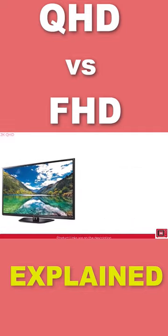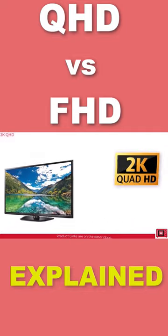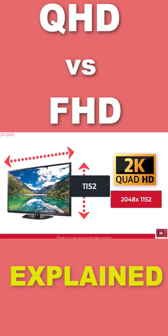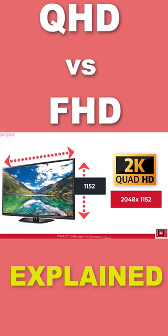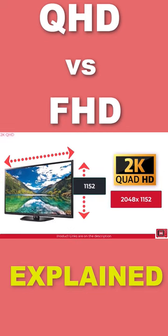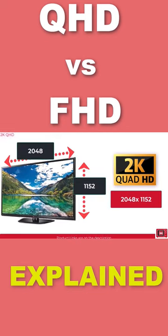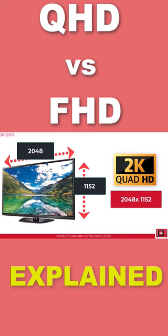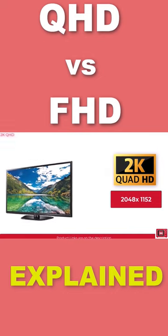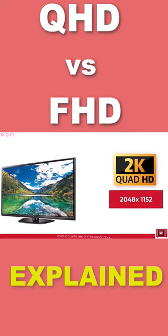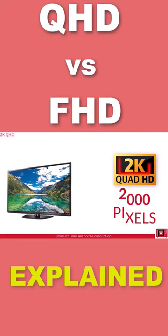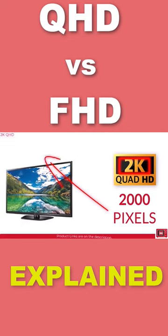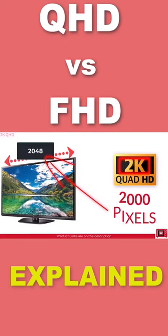When you see QHD or 2K on a TV product, it means the display has a total of 1152 pixels arranged vertically and 2048 pixels arranged horizontally on the screen. The term 2K means 2000 pixels, which is the approximate number of pixels on the horizontal screen.